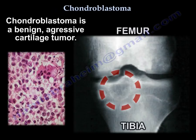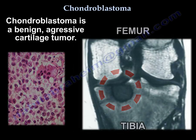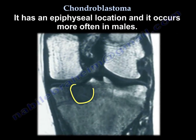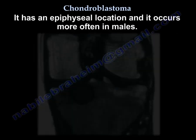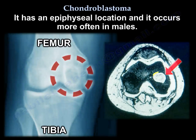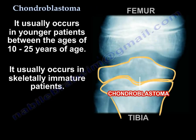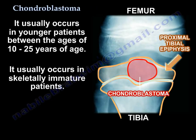Chondroblastoma is a benign aggressive cartilage tumor. It has an epiphyseal location and it occurs more often in males. It usually occurs in younger patients between the ages of 10 and 25 years of age, typically in skeletally immature patients.